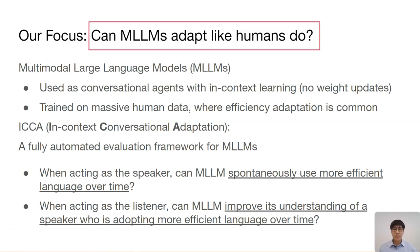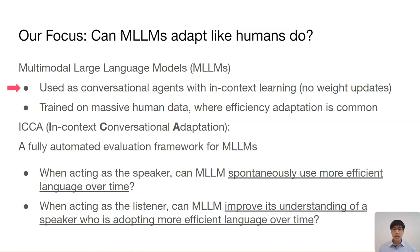We want to evaluate if multimodal LLMs can adapt like humans in these situations. Such adaptations will save text generation costs and efforts of the human interlocutor while reducing misunderstandings. Because MLLMs are usually used as conversational agents with just-in-context learning, they should be evaluated under the same condition where no weight updates are made. These models have performed well in many tasks under this condition, showing impressive abilities consistent with human behavior. They can do so because they have learned from large amounts of human data. Given that adaptation for efficiency is everywhere in human conversational corpora, we expect LLMs to show this ability too.